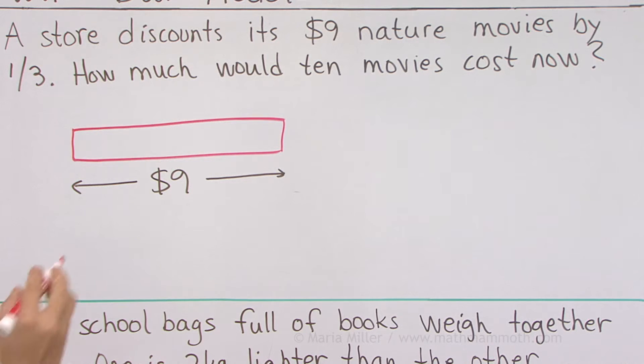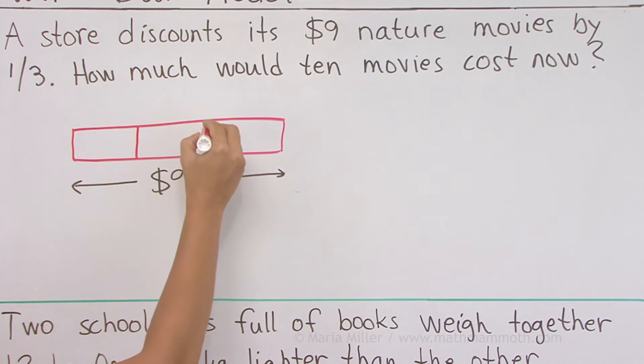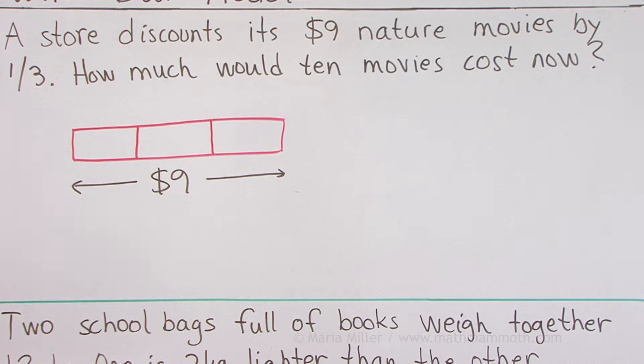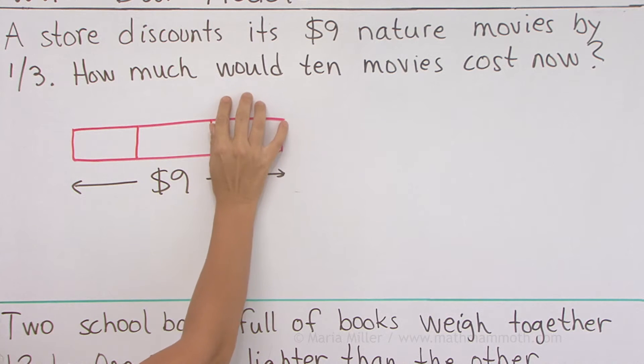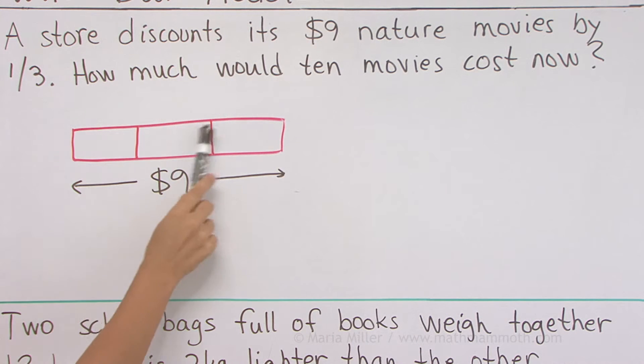So what do I do now? Now, I will divide this into three parts, one-third. The price is discounted by one-third. That means that this much of the price goes away. It's going to be cheaper. How much is one block here? That's so easy. Just $3, right?